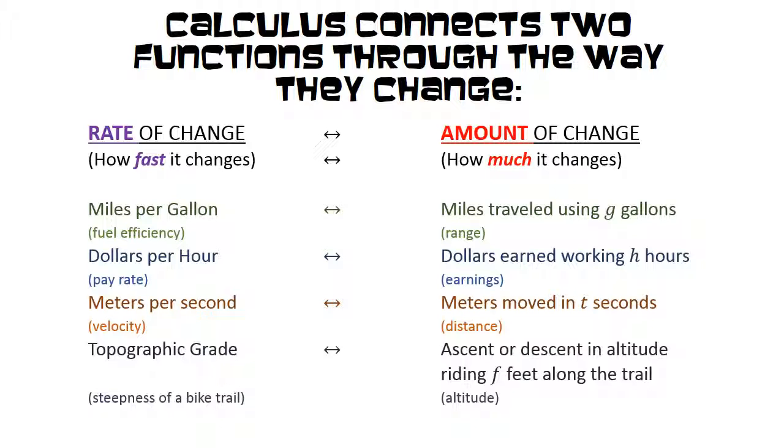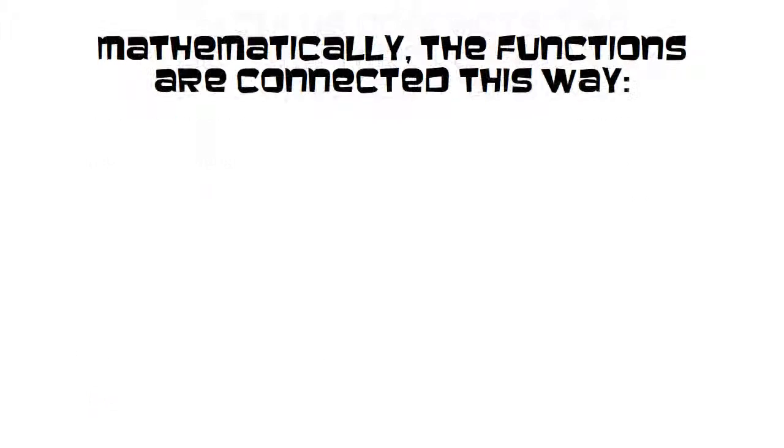The steepness of the trail is the rate of change, and what we're changing there is the altitude. The amount of change is going to be the altitude up or down.